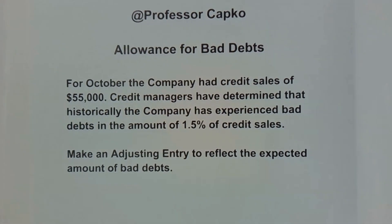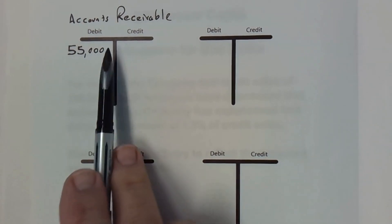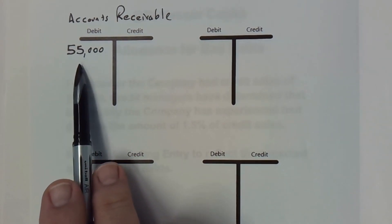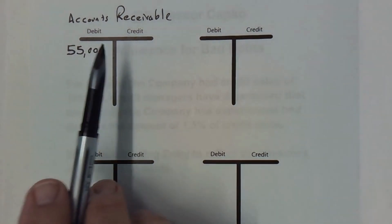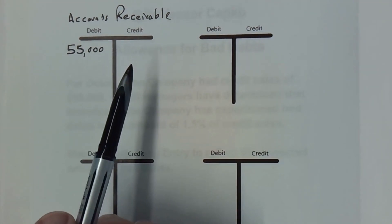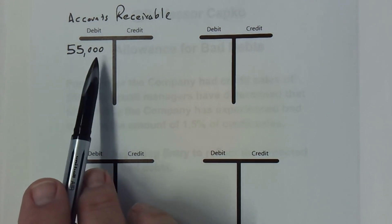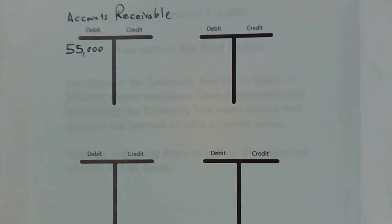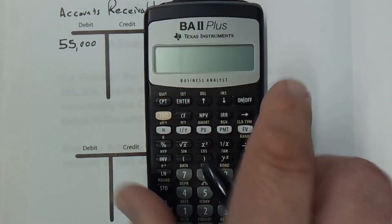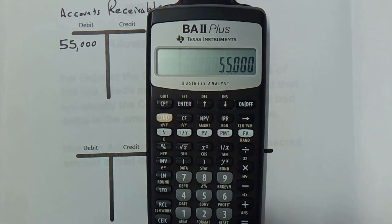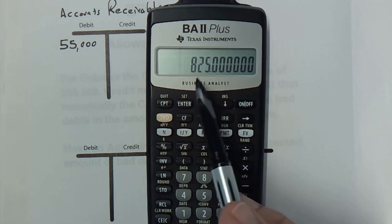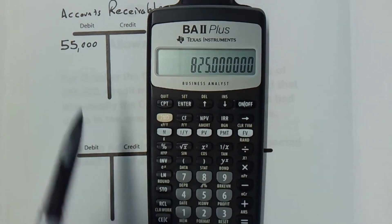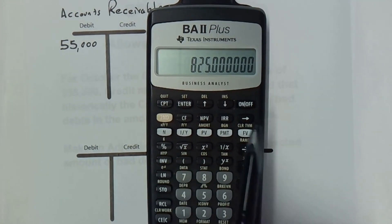The best way to do that is with an allowance for bad debts account. Let's look at this on a T-account. We have an asset called accounts receivable with a debit balance of $55,000. We know that 1.5% of them will not pay, so: $55,000 multiplied by 1.5% gives us $825. Among the $55,000 in credit sales, we expect that $825 won't be collected.